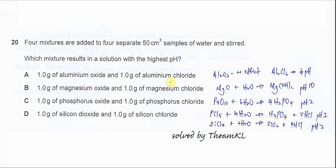Question 20. Four mixtures are added to four separate 50 cm³ samples of water and stirred. Which mixture results in a solution with the highest pH?